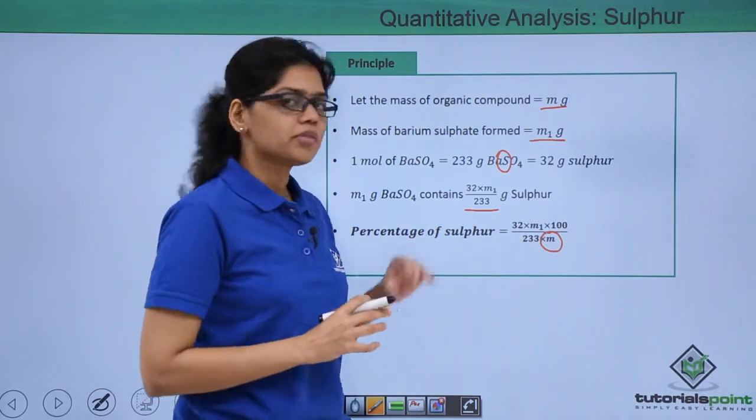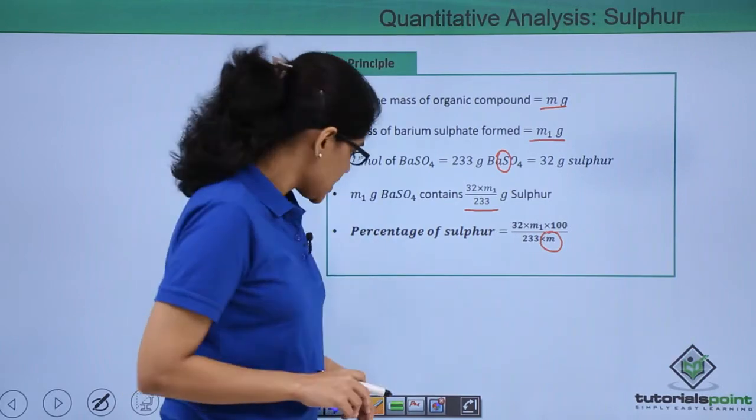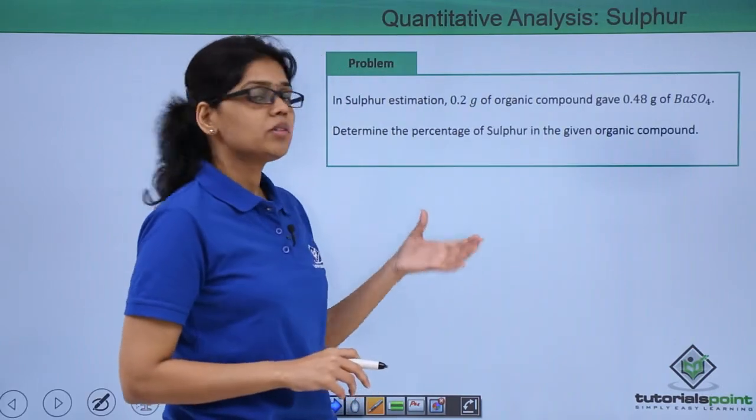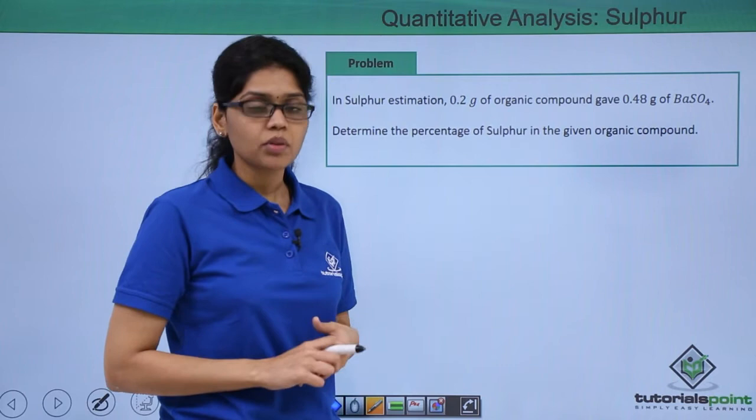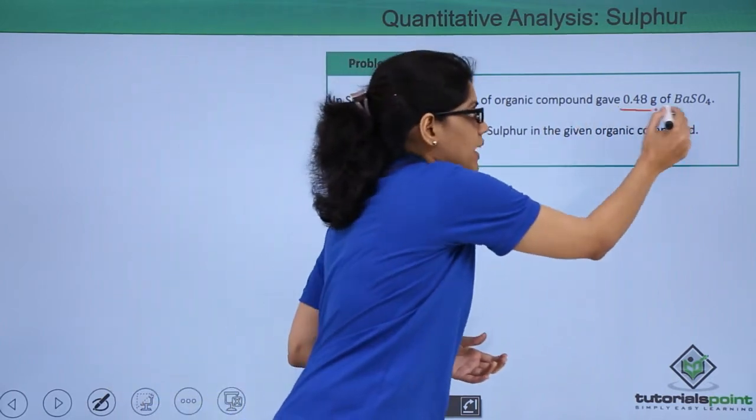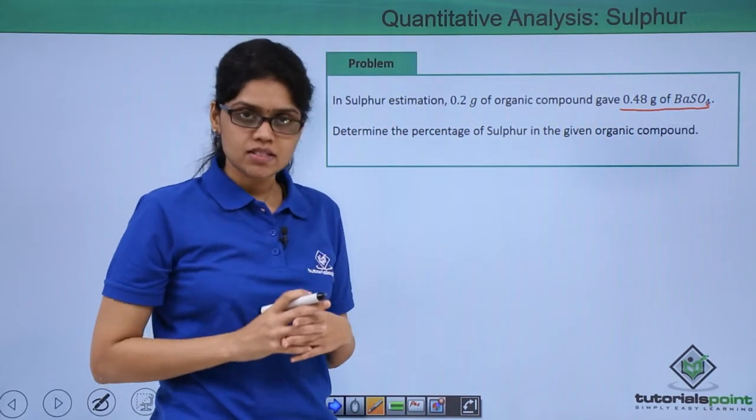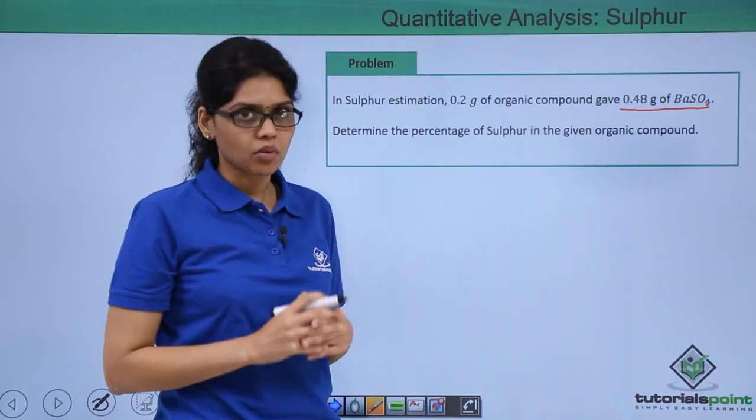Let's use a simple formula in solving a very simple problem. So here we have been given 0.2 g of organic compound gives us 0.48 g of barium sulphate and we need to estimate sulphur in this organic compound.